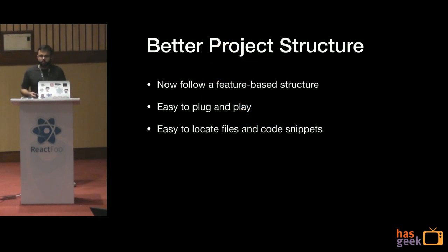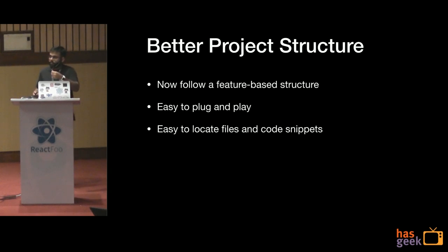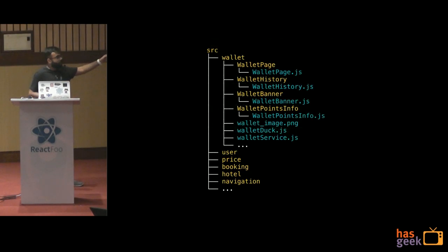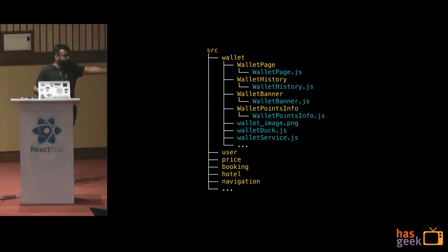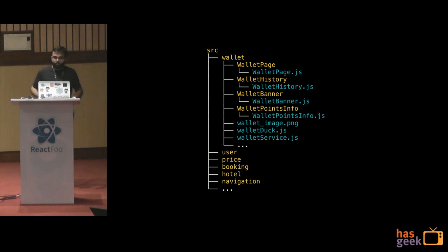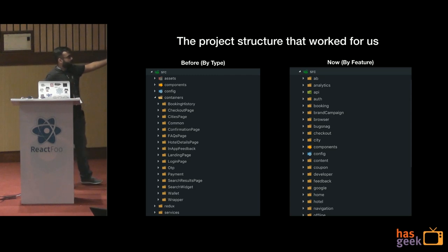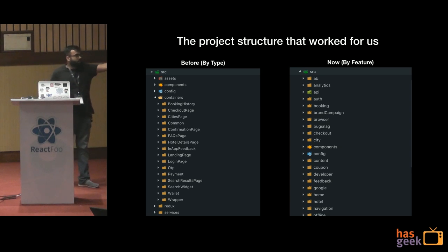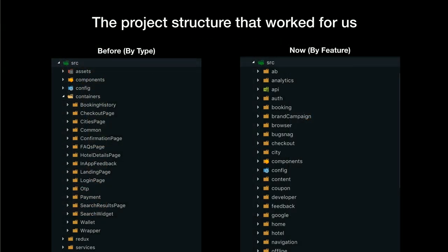That's where we came up with our current feature-based project structure. It makes it easy to plug and play features, and the context of each feature belongs to one single folder. It's much easier to search for code snippets and locate files related to wallet. Now you have a wallet folder containing components, wallet image, wallet duck, wallet service, and every other related file. Then you have user, pricing, booking, hotel, navigation — everything is just a feature. Even navigation is just a feature the app follows. Earlier it was assets, components, containers, Redux, services. Now if I add A/B testing, it goes to the AB folder; analytics goes to analytics. It's still being refactored, but you get the point.